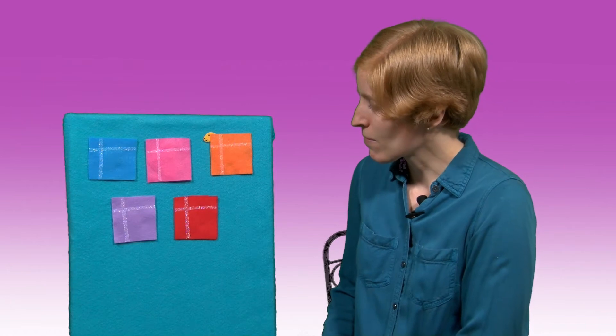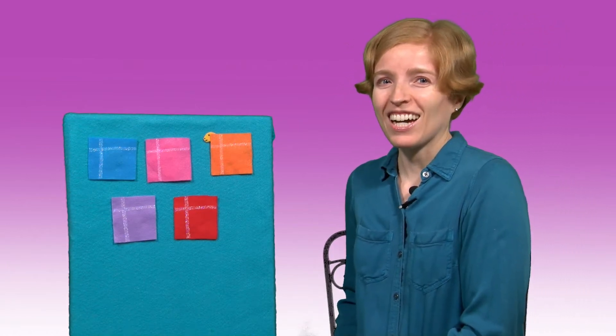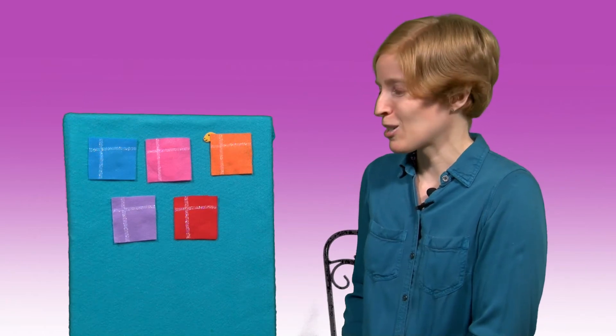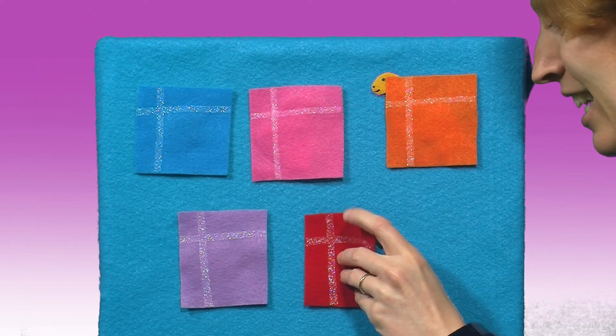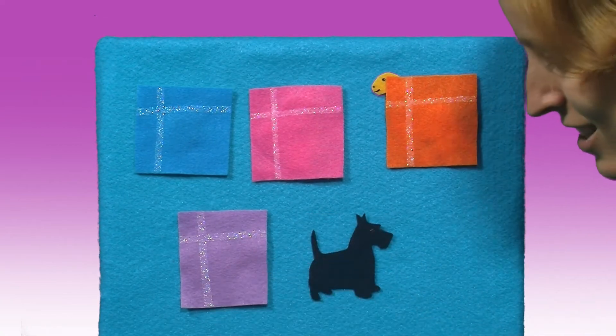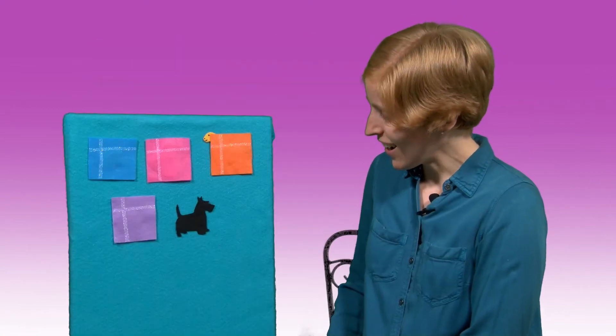Hmm, where do you think the fox is hiding? What color box? Let's look behind the red box. All right, can you say this rhyme with me? Little fox, little fox, are you behind the red box? Let's see, is that a fox? It's a little dog.